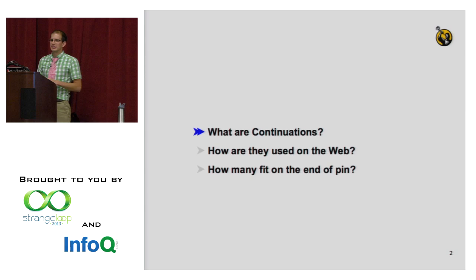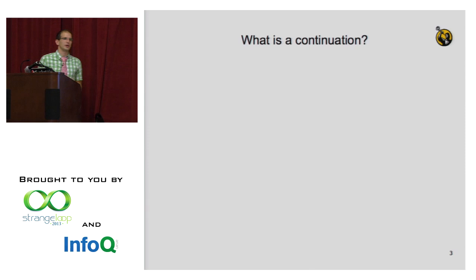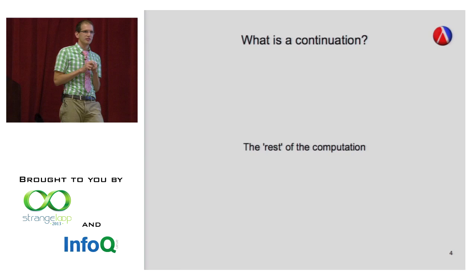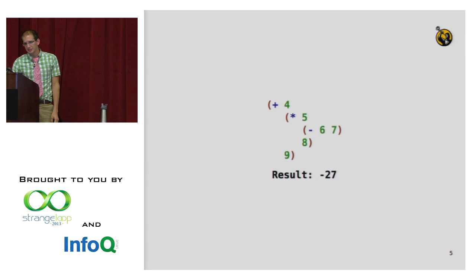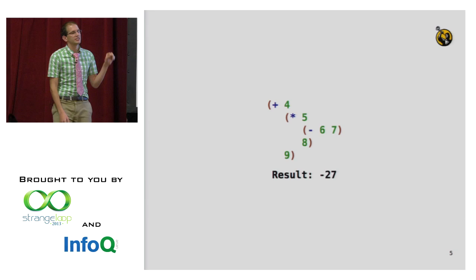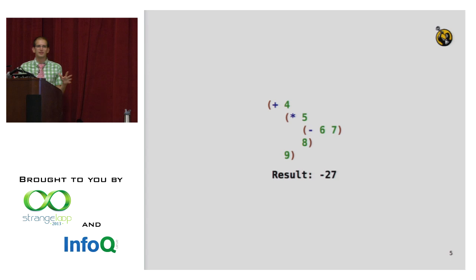I'll talk about their classic uses on the web and then about more exotic uses of continuations. So to start off: what is a continuation? The classical definition is the rest of the computation, meaning that at any given point in a program, the continuation is all the things that will happen after this piece of the program is done. For instance, if we look at this computation here — this beautiful program with 4, 5, 6, 7, 8, and 9, and addition, multiplication, and subtraction — this program results in negative 27.